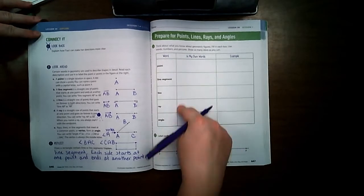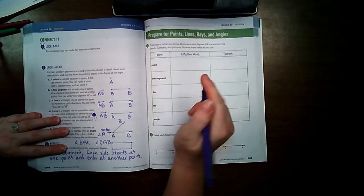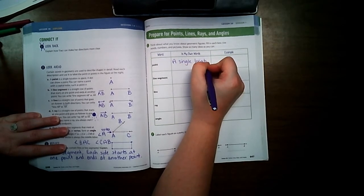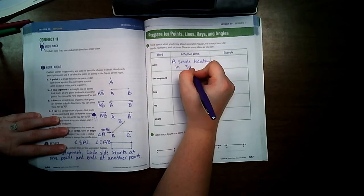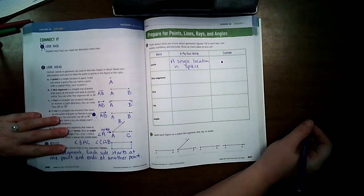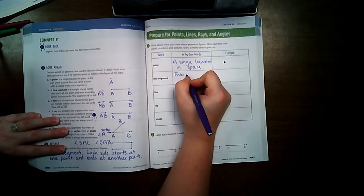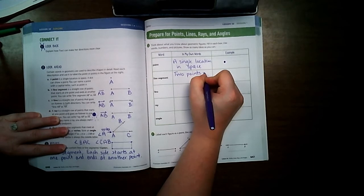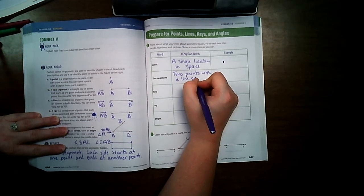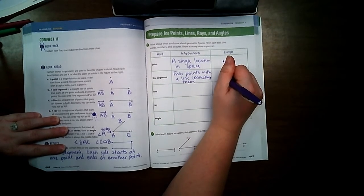Over here, we're going to work on our vocabulary, but this time we're going to put it in our own words. A point is a single location in space, and it looks like that.